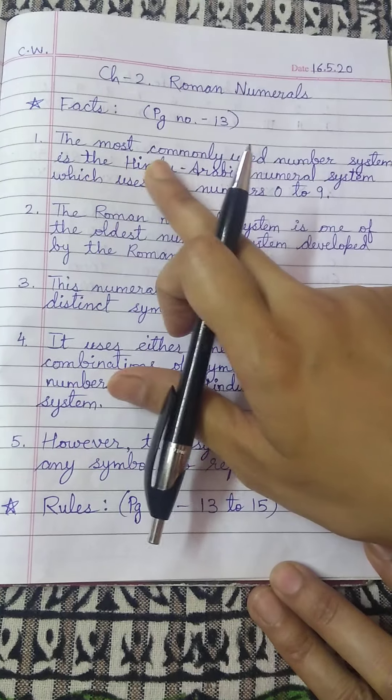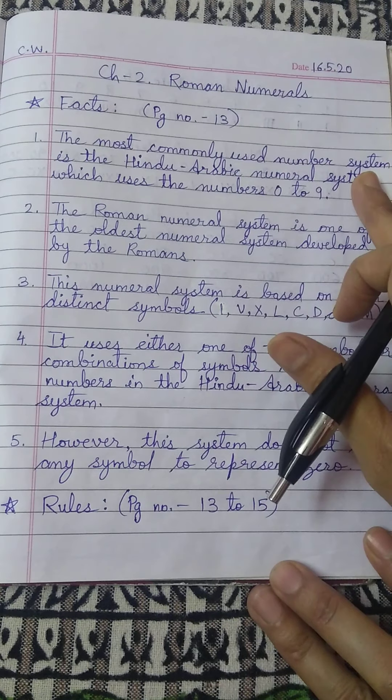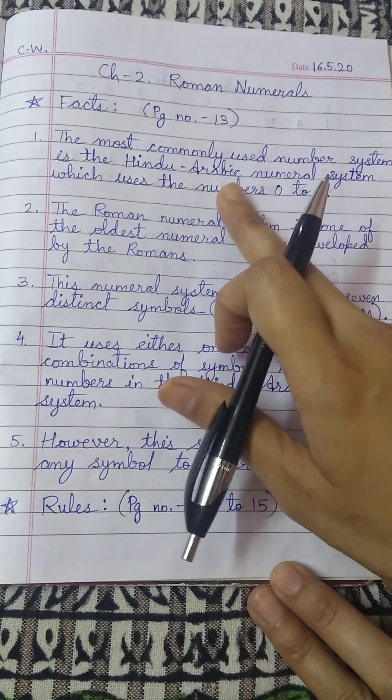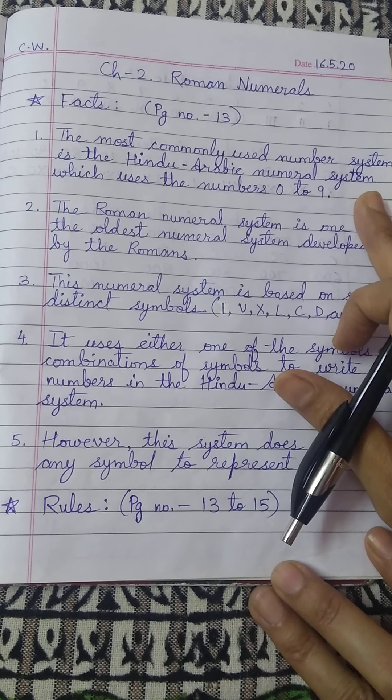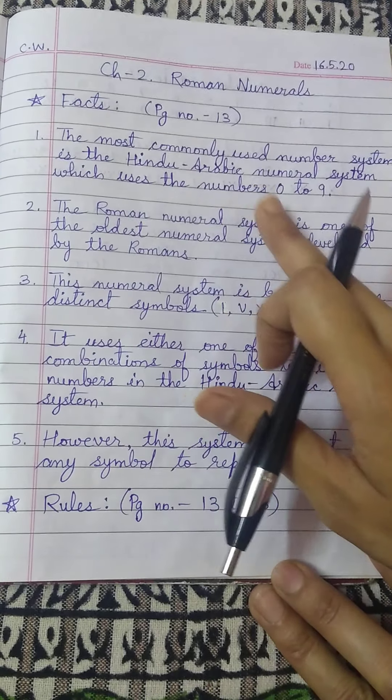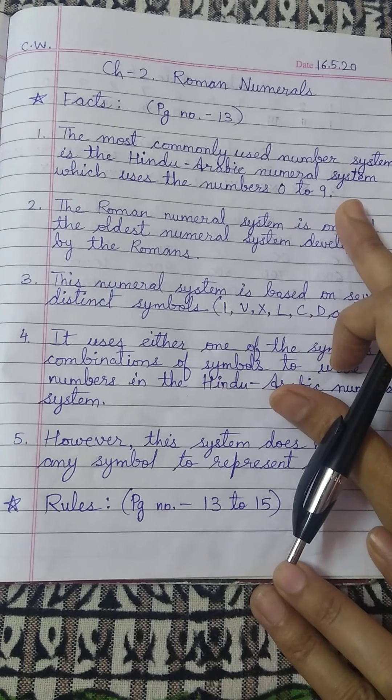Number 1 fact is the most commonly used number system is the Hindu Arabic numeral system. Hindu Arabic numeral system which uses the numbers 0 to 9. What are 0 to 9?